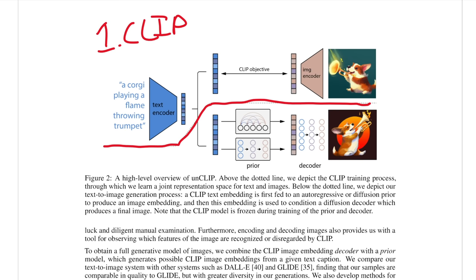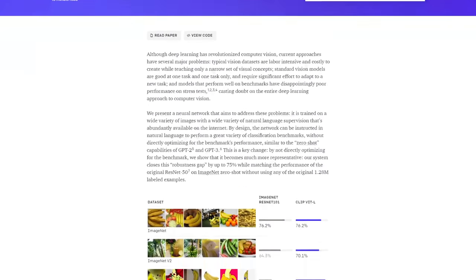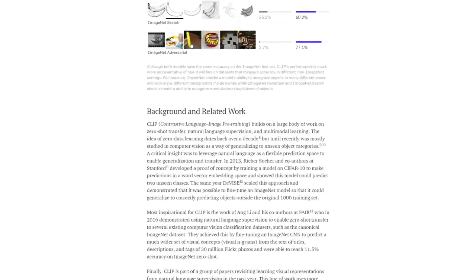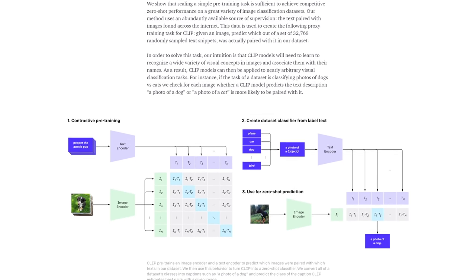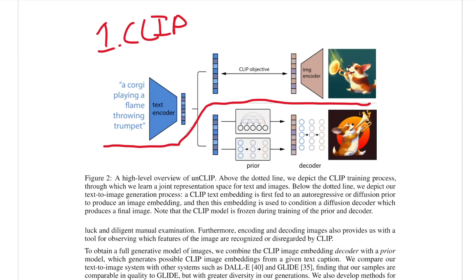For example, the text 'a corgi playing a flame-throwing trumpet' and an image of that exact thing should have very similar embeddings. This is similar to the original paper in that they are compressing images into a latent space, but here they're doing it with CLIP instead of a DVAE. One of the benefits of using CLIP over a DVAE is that now they can do the same embedding process with text and into a semantically similar latent space as the images.